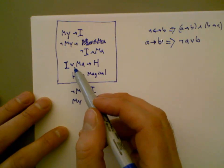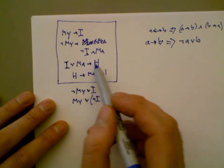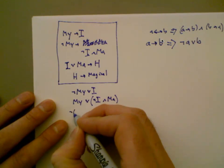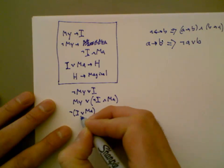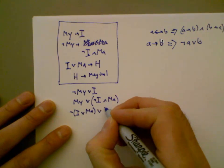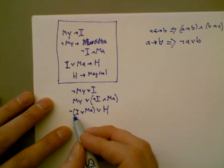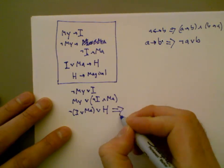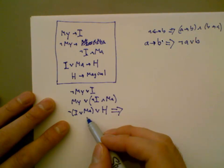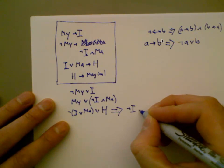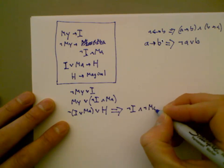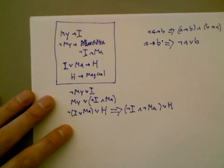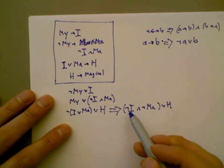Take out the implication. Now we push the negations in. So not (A or B) means we have not A and not B. We've got both of those or this. So everyone see how we pushed the negation inwards?